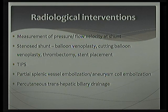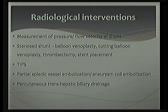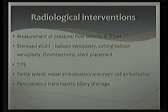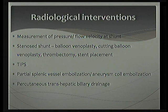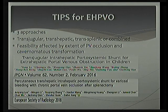There are few radiological interventions useful in these patients: measurement of pressure or flow velocity at the shunt can indicate shunt stenosis, and a stenosed shunt can be treated with balloon venoplasty or cutting balloon venoplasty, thrombectomy, or stent placement. TIPS for EHPVO is emerging. For uncontrolled hypersplenism in a patient not fit for surgery, partial splenic vessel embolization can be contemplated. If a splenic artery aneurysm develops due to hyperdynamic circulation, aneurysm coil embolization of the splenic artery may be used. Percutaneous transhepatic biliary drainage is also available for bile duct obstruction.